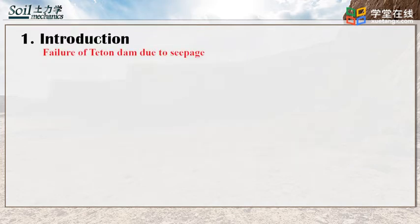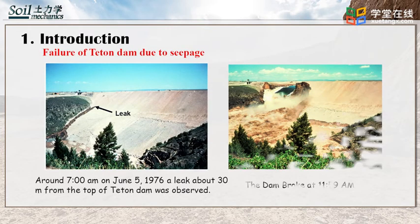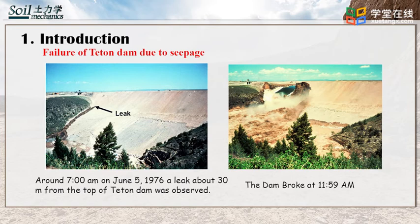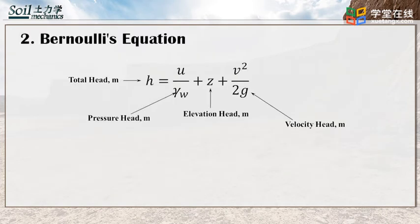Here is one example showing the failure of a dam due to seepage. According to the Bernoulli equation, the total head at a point in water in motion can be given by the sum of pressure head, velocity head, and elevation head.